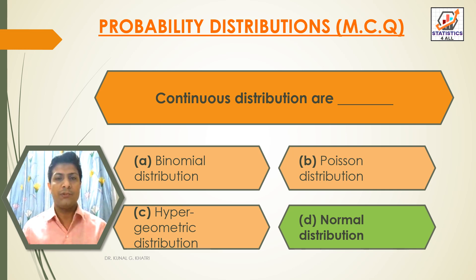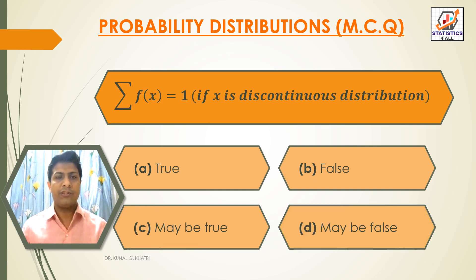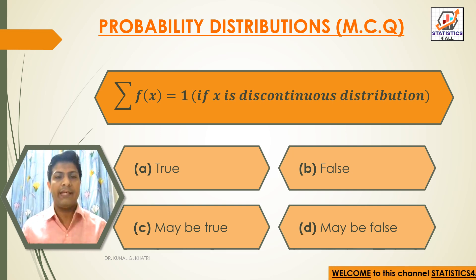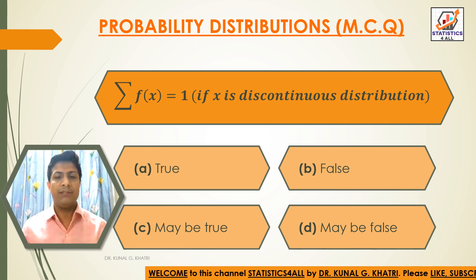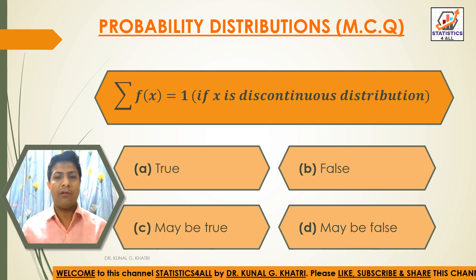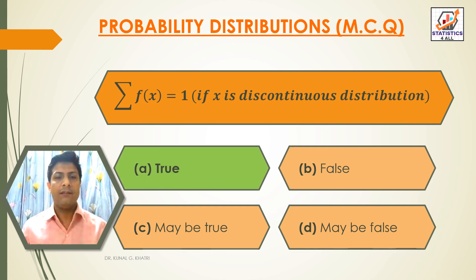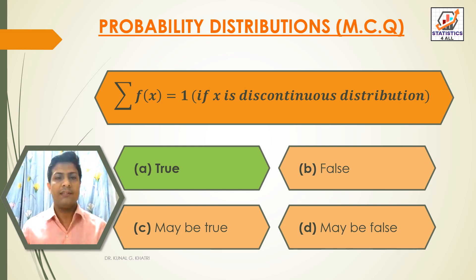Next question: sum of f(x) is equal to 1 if x is a discontinuous distribution. Option A: true. Option B: false. Option C: may be true. Option D: may be false. The answer is option A, true.